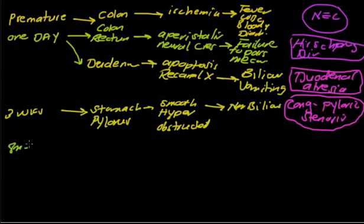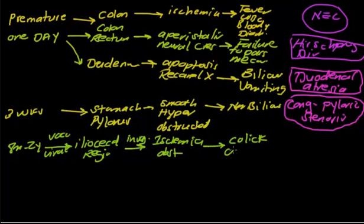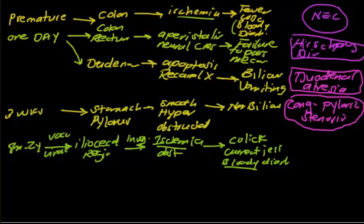Moving to an eight-month to two-year-old baby, usually after a vaccine or viral illness, the commonly affected area is the ileocecal region. The pathology is invagination of the terminal ileum into the cecum, causing ischemia plus mechanical obstruction. The clinical features are colicky pain of short duration and currant jelly appearance — meaning bloody diarrhea. This disease is intussusception.